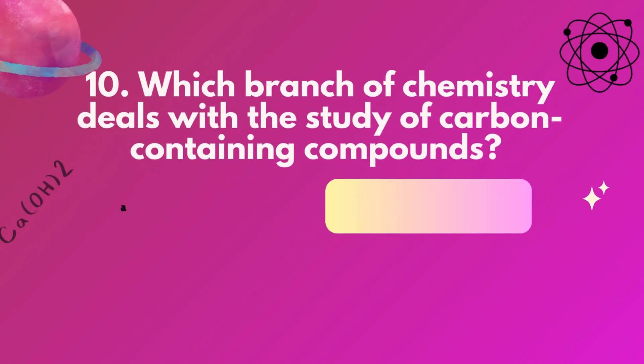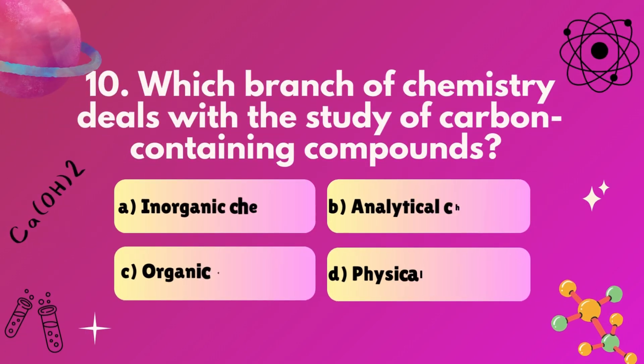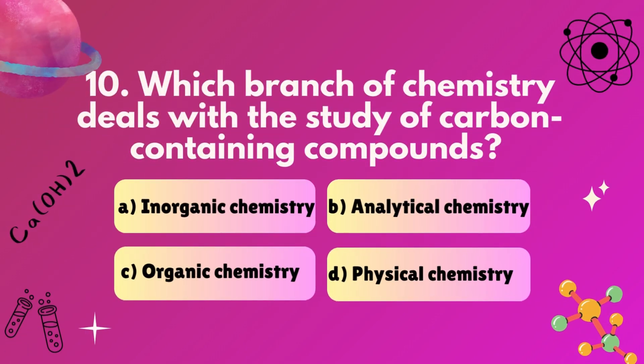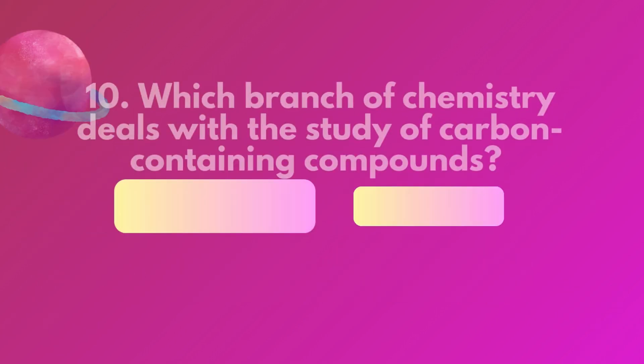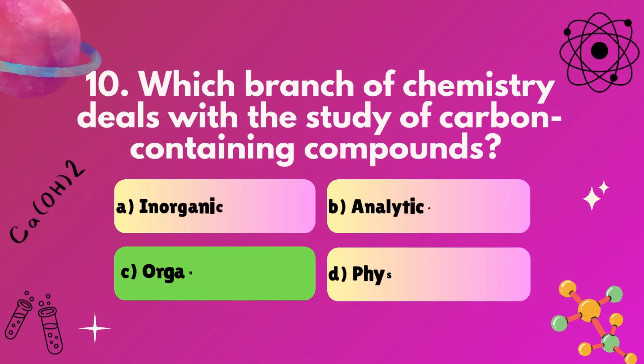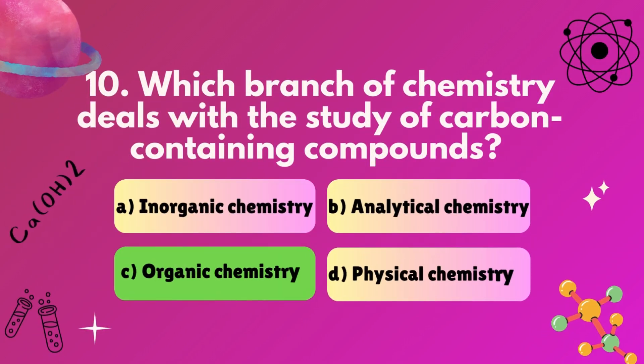Question 10: Which branch of chemistry deals with the study of carbon-containing compounds? A, inorganic chemistry. B, analytical chemistry. C, organic chemistry. D, physical chemistry. Correct answer: C, organic chemistry.